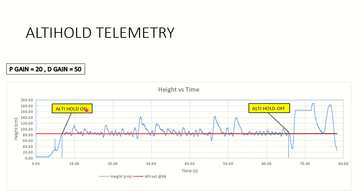You can just look at it — altitude-hold on. This was around 7 seconds into the flight when I switched on the altitude hold. And then, as you can see here, the drone is actually trying to retain its position, although we can see oscillations in the graph.